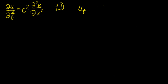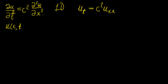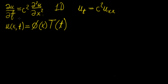You can also write it using the shorthand notation, using subscripts to mean the partial derivative — so this is the same as c² u_xx. To solve partial differential equations and find the general solution, we need to assume that the PDE is separable. By separable, we mean that the solution is a product of two functions: we'll call them ψ of x and T of time — ψ is a function of space, T is a function of time.